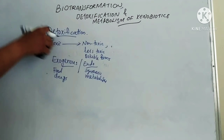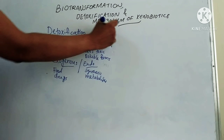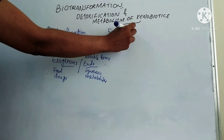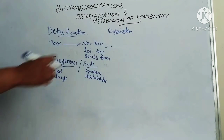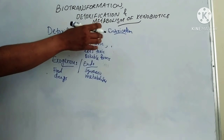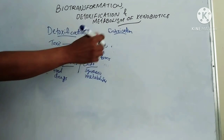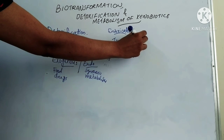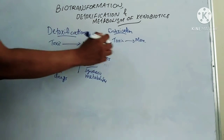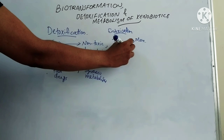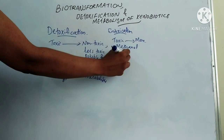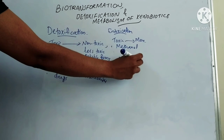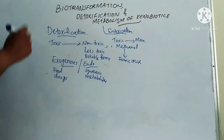Biotransformation includes detoxification and intoxication. Intoxication means conversion of a toxic compound into a more toxic one. For example, methanol is converted to formic acid — that is intoxication.